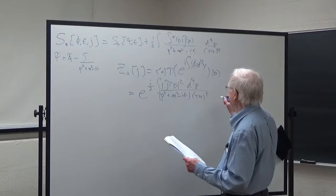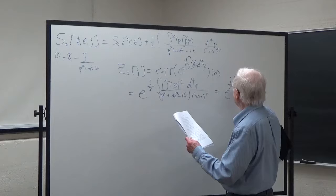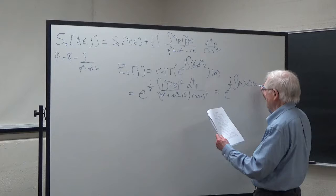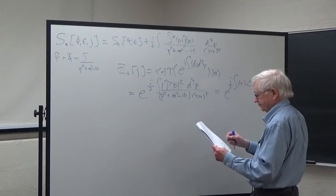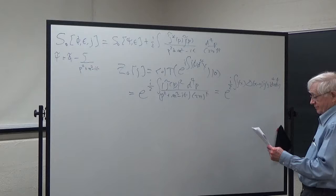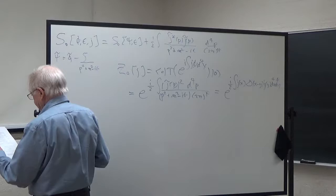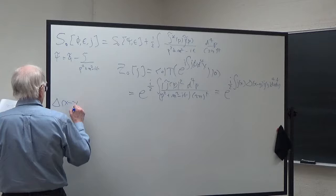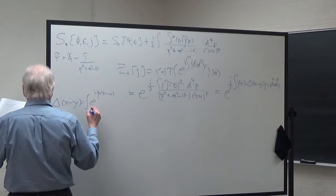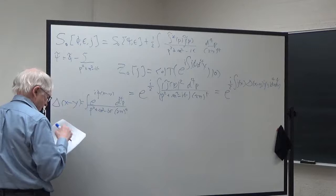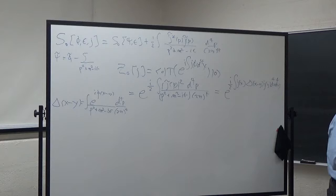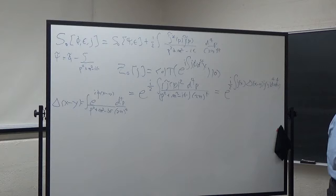Another way of writing this is that Z_0[j] equals e to the i/2 times the integral of j(x) times Delta_F(x minus y) times j(y) d⁴x d⁴y, where Delta_F(x minus y) is the Feynman propagator: the integral of e to the i p(x-y) over (p² plus m² minus i epsilon) d⁴p over (2π)⁴.